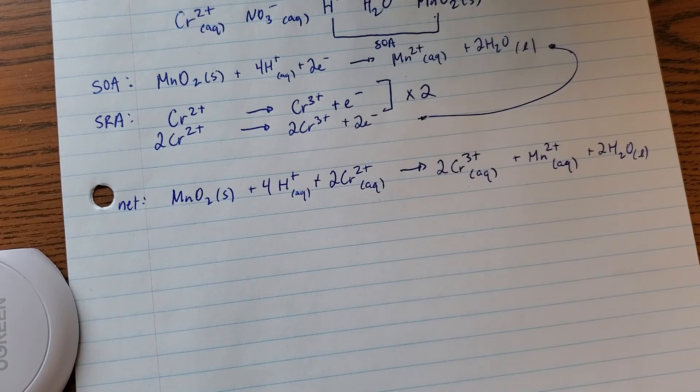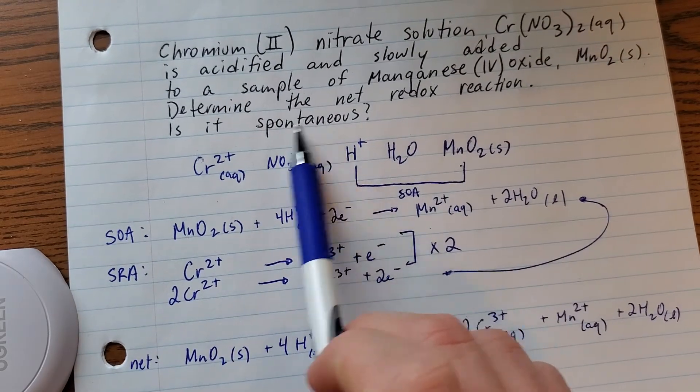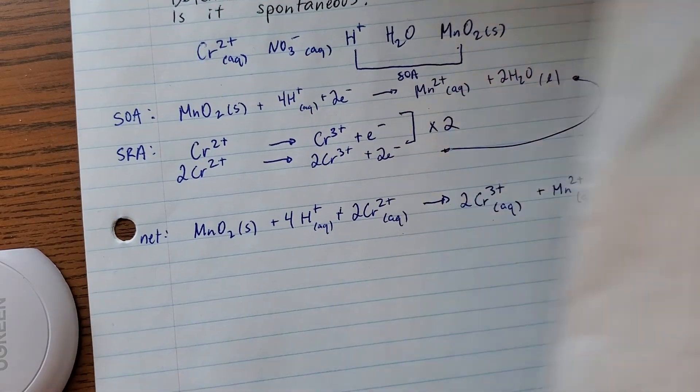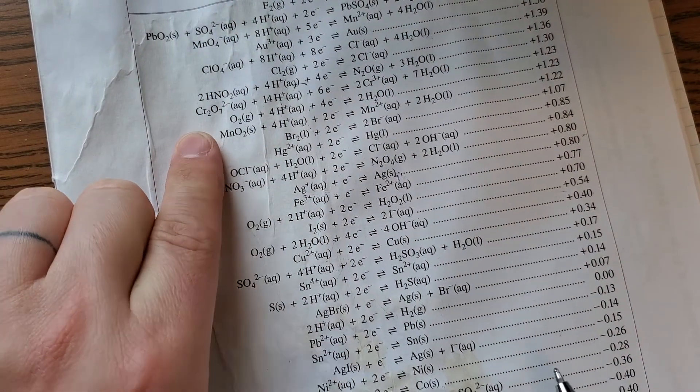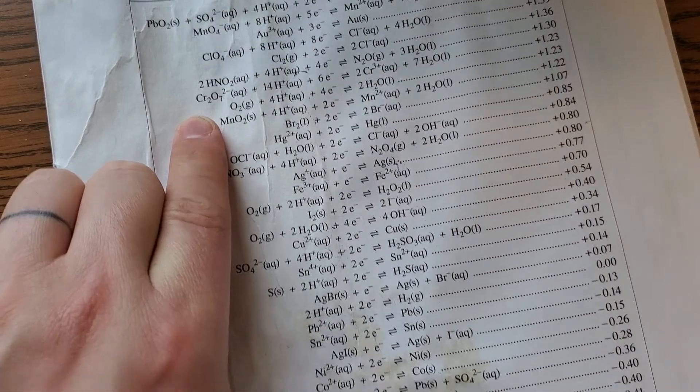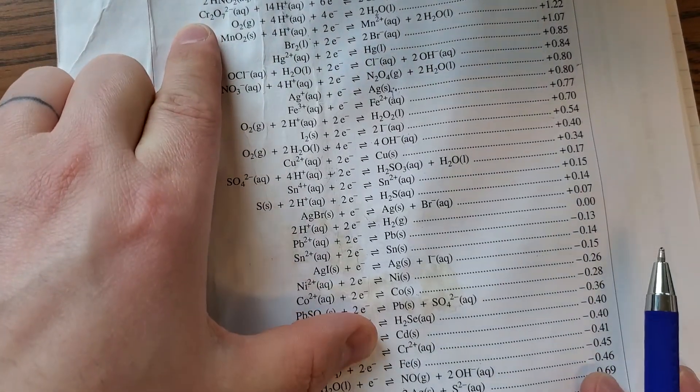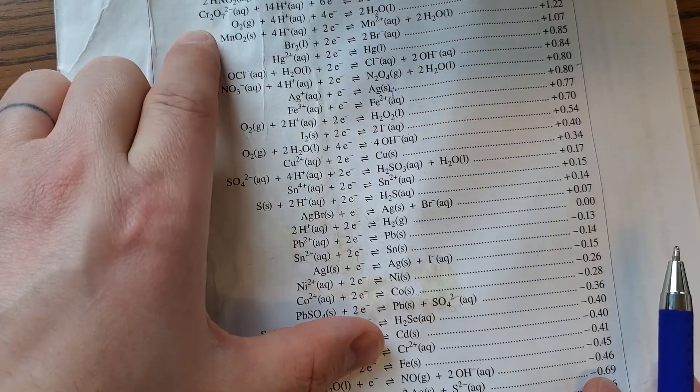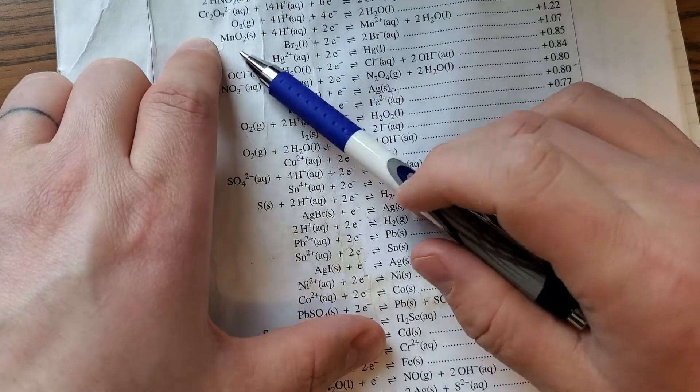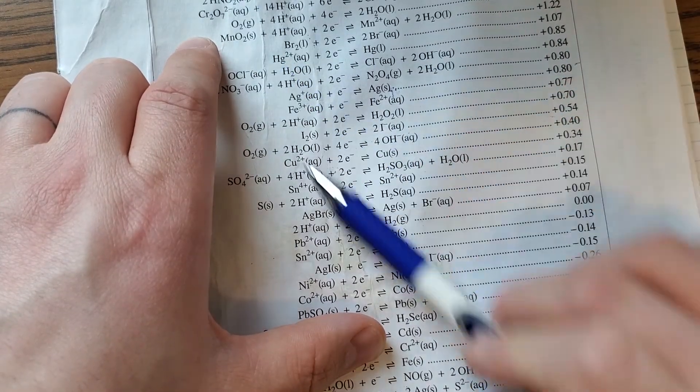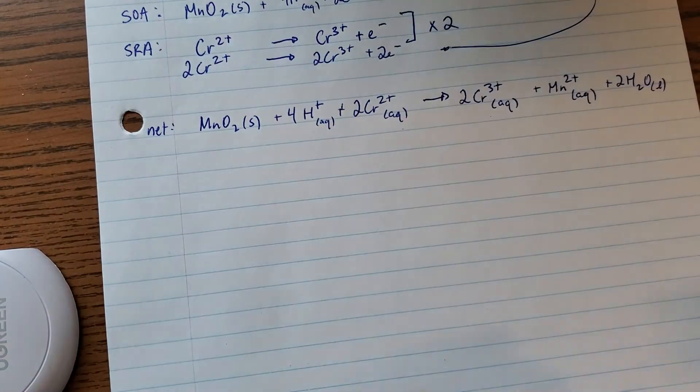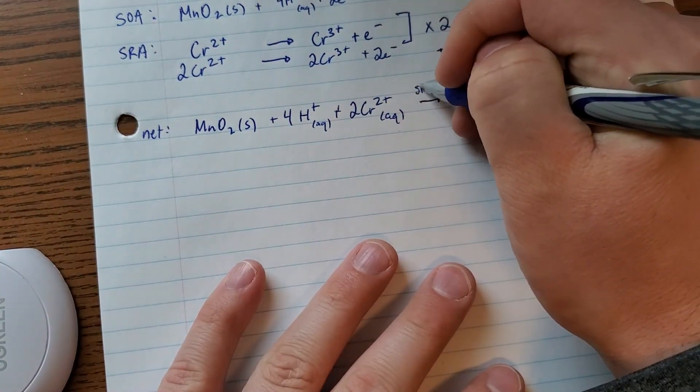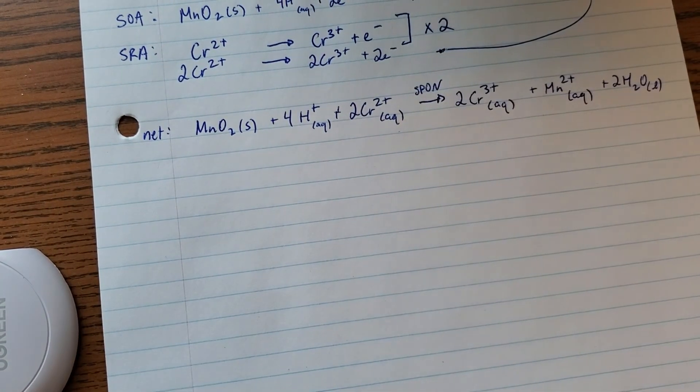The last thing we need to comment on is if it's spontaneous or not. And that's easy. That's just if the SOA is above the SRA in the table. Which it totally is. There. I'm highlighting it with my finger and thumb. So manganese oxide was up here. The chromium 2 is all the way down here. This is definitely a spontaneous reaction. So I'm going to write 'spont.' Looks good. I hope this helps.